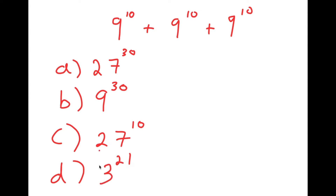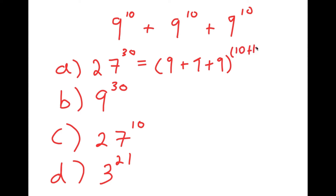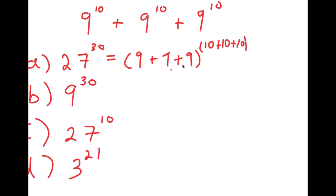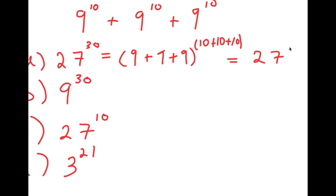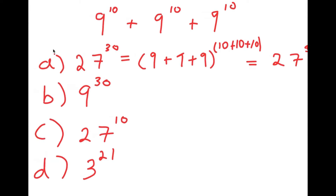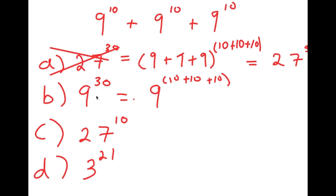Let's go through all these option choices and see if they're right or not. Option A, 27 to the power of 30, was likely arrived at by adding all the bases and adding all the exponents — so 9 plus 9 plus 9 to the power of 10 plus 10 plus 10, which equals 27 to the power of 30. This is wrong because that is not the proper way to add exponents. Option B, 9 to the power of 30, was likely gotten by keeping the base the same and adding the exponents, which is also wrong.